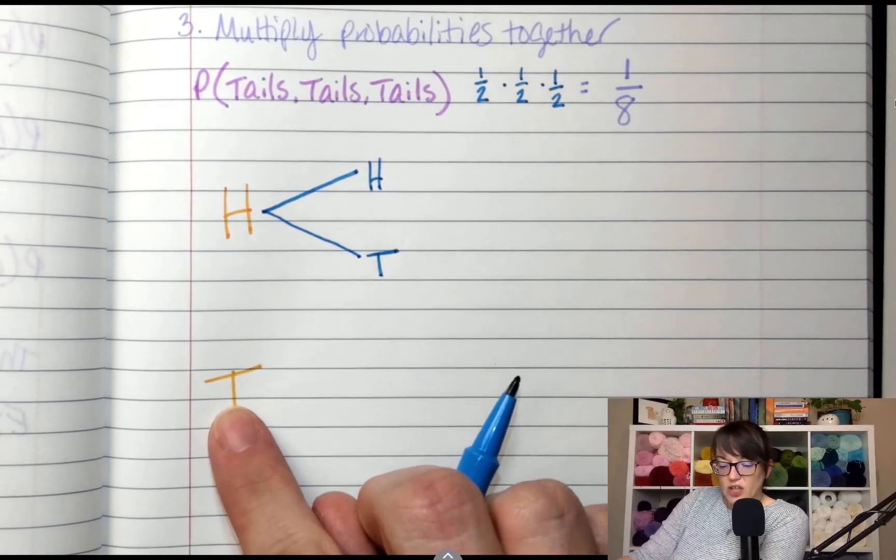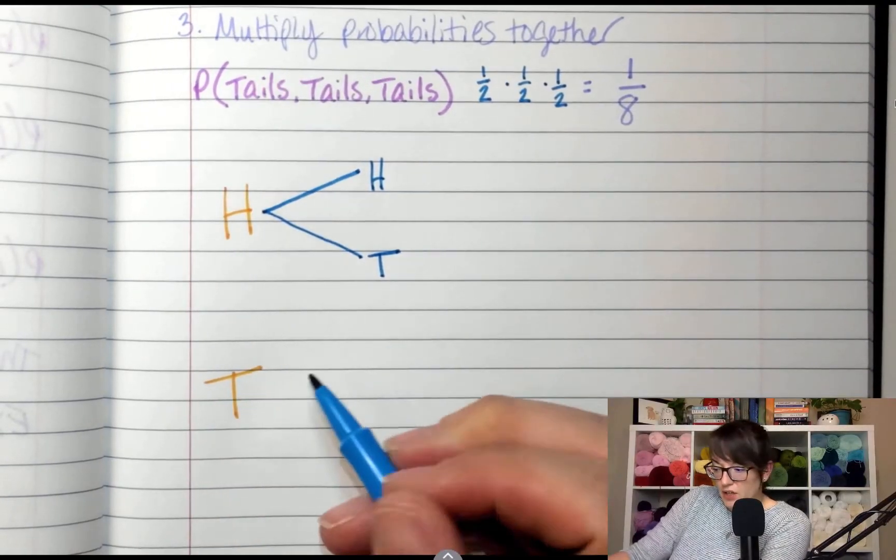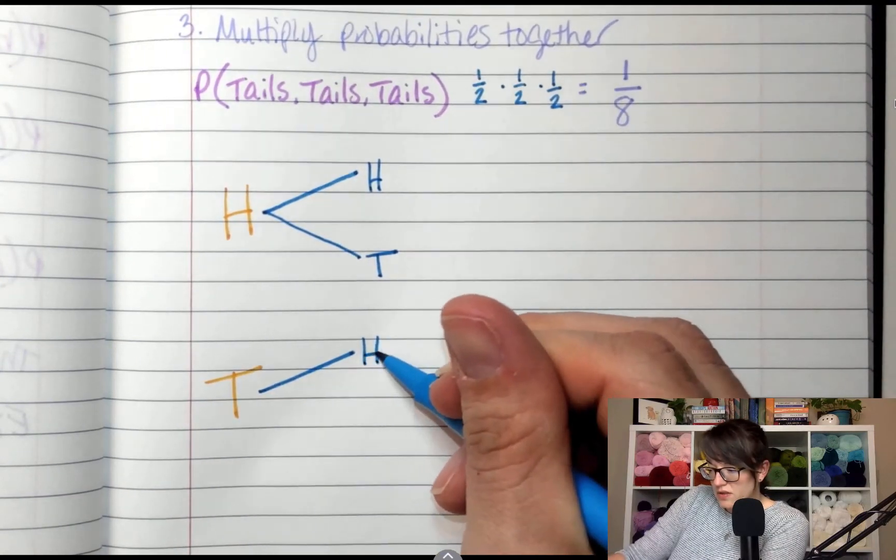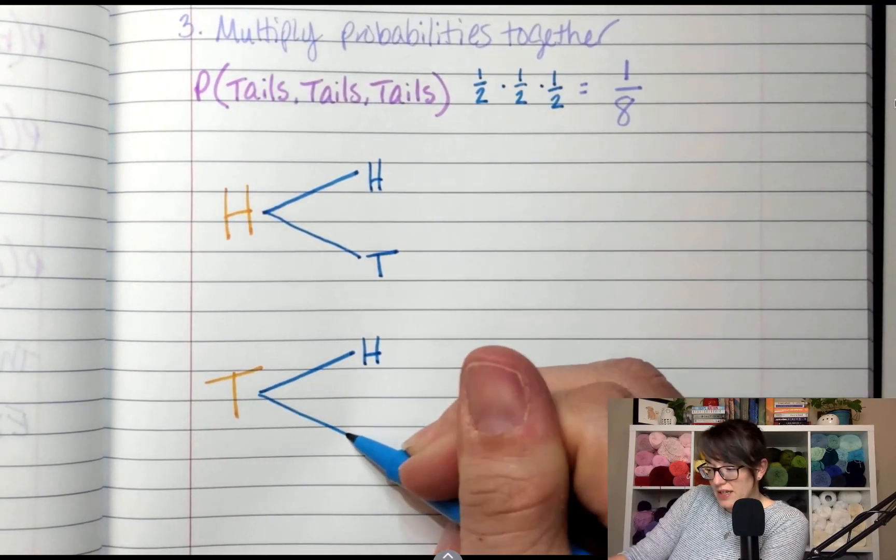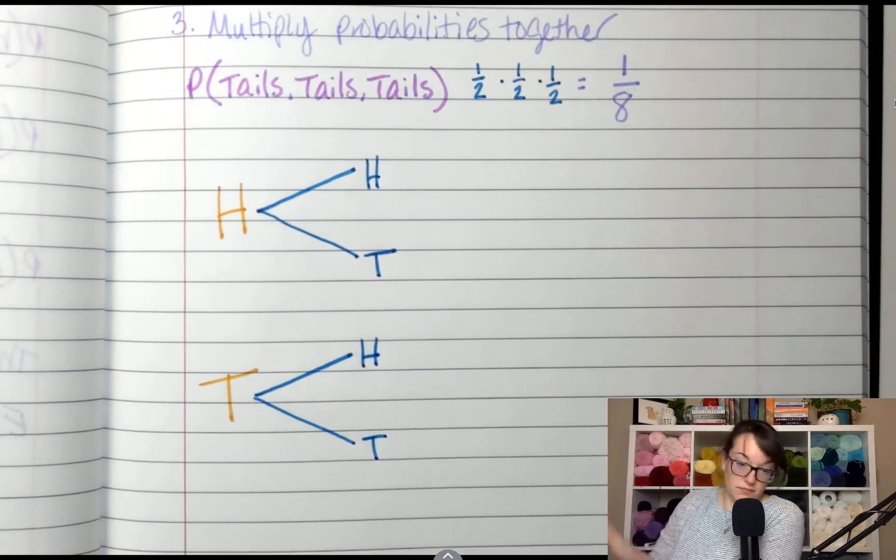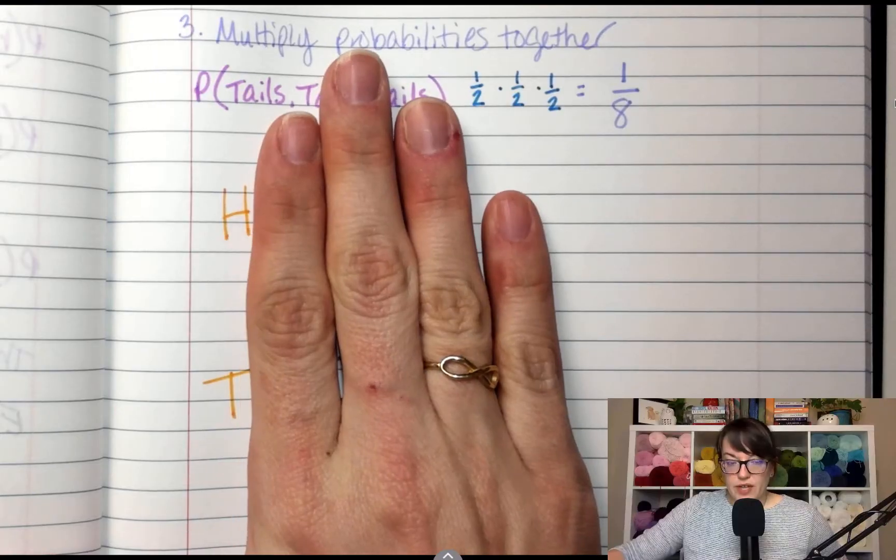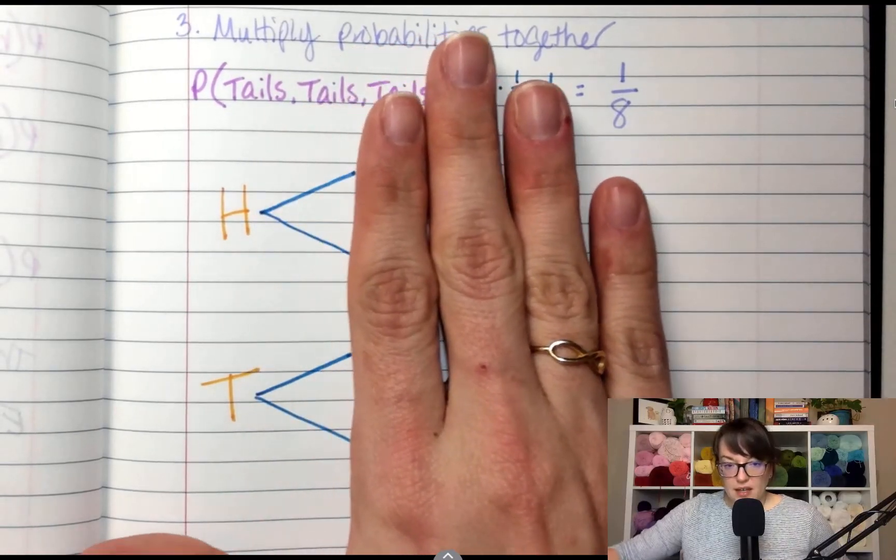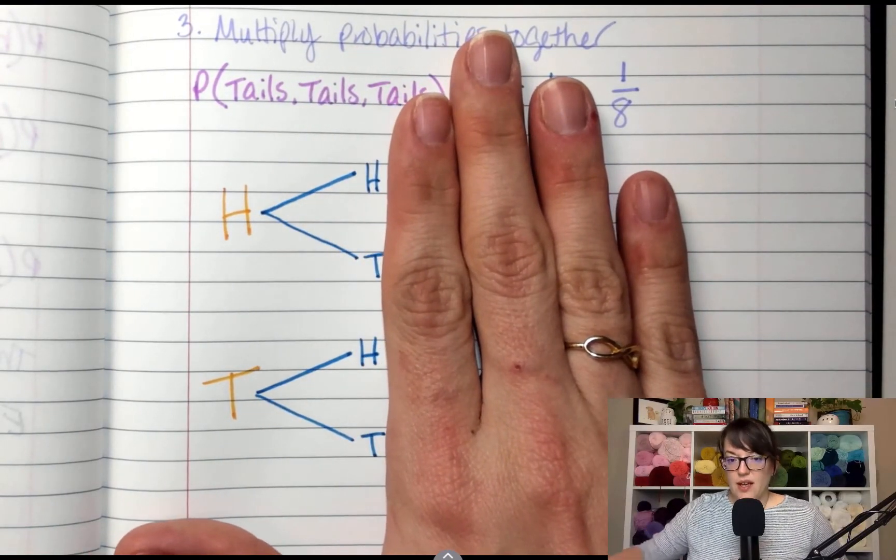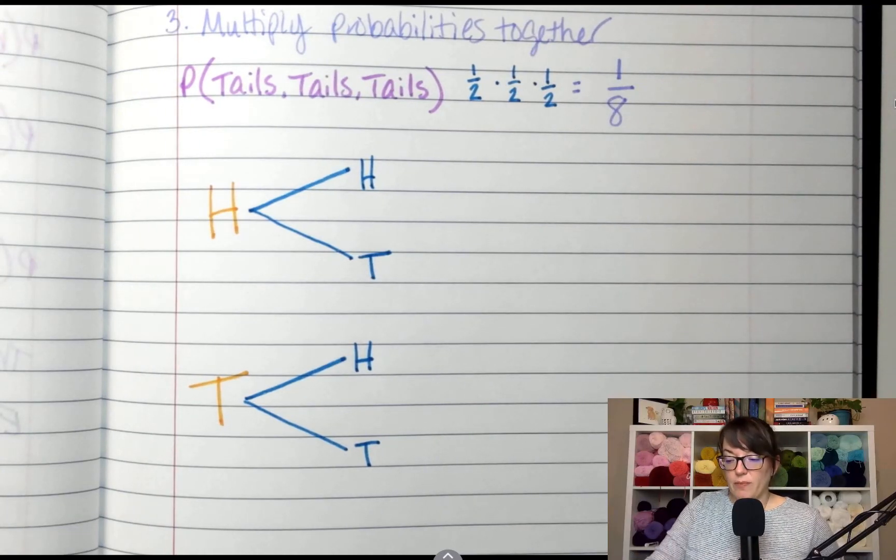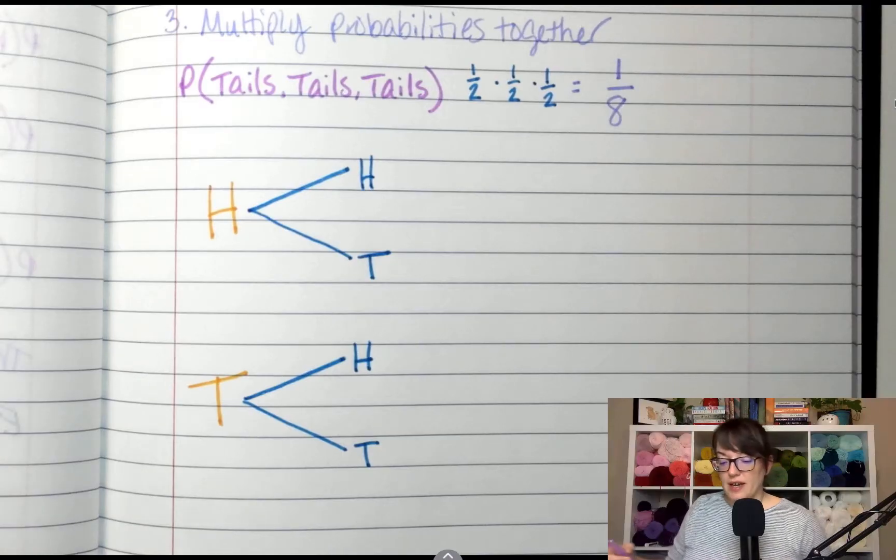If I landed on tails the first time, it could land on heads the second time. Or it might land on tails. It's possible. Now, I have one column, heads or tails. The second column, heads and tails. I need to do it a third time because I'm flipping the coin three times.